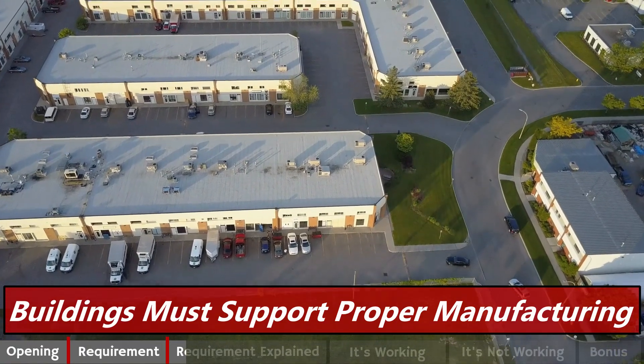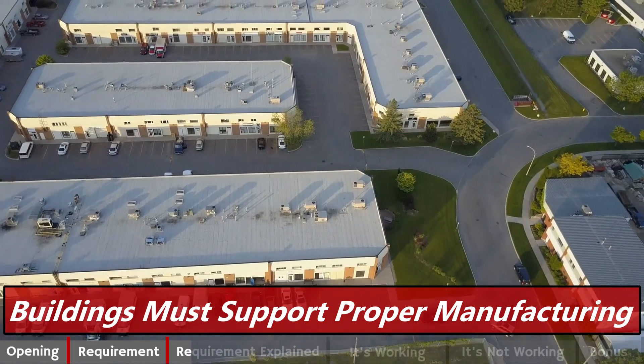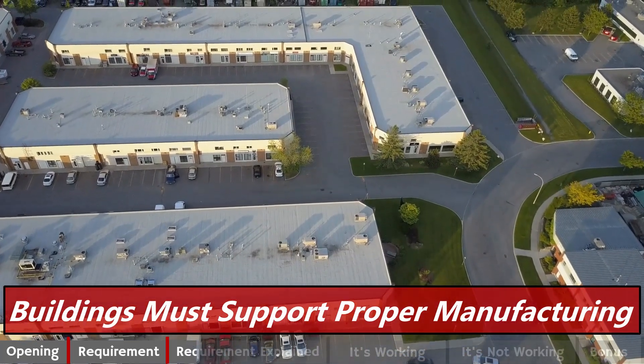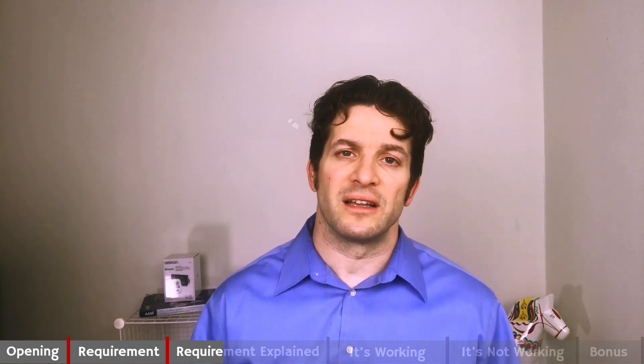Buildings in five words: Buildings must support proper manufacturing. Your buildings have to be suitable to support your manufacturing process. This means you have to have enough space to prevent mix-ups, ensure orderly handling, and support all necessary operations.